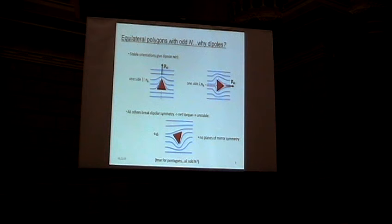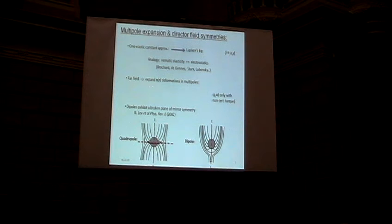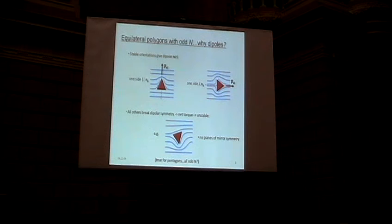And so you can understand why polygons with odd n, for example, like a triangle, give you dipoles, just from this simple picture. And one thing you can't see here is there's a Coulomb term. And so the Coulomb term is only non-zero with a non-zero external torque applied to the nematic, and that's important.